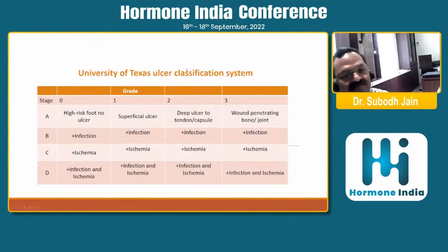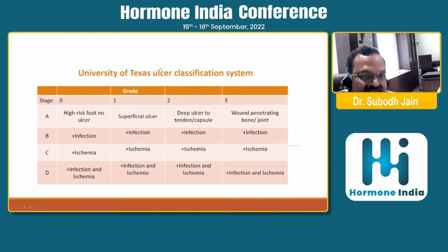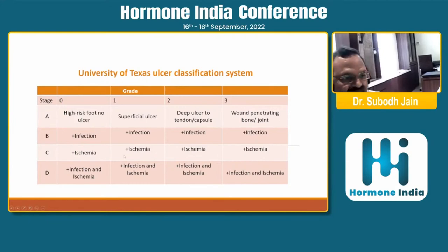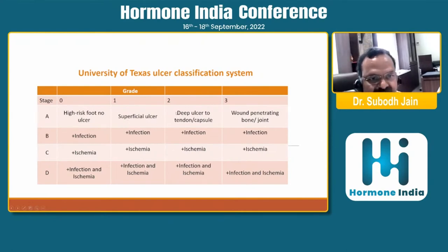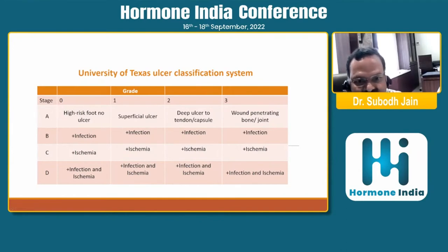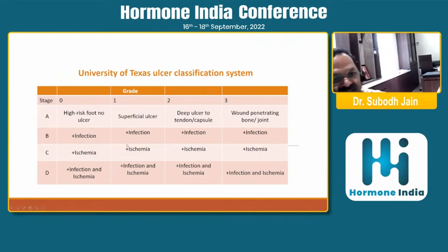The Meggitt-Wagner classification was deficient in addressing the infection component. The University of Texas Ulceration Classification addresses this — it accounts for whether infection is present, whether ischemia is present, or if both are present, staging from A to D. Clinically, one can say the foot is grade 1 or 2, stage A or B. Using a probe, you can detect whether the ulcer is bone-deep or involves joints. This is a very useful classification.